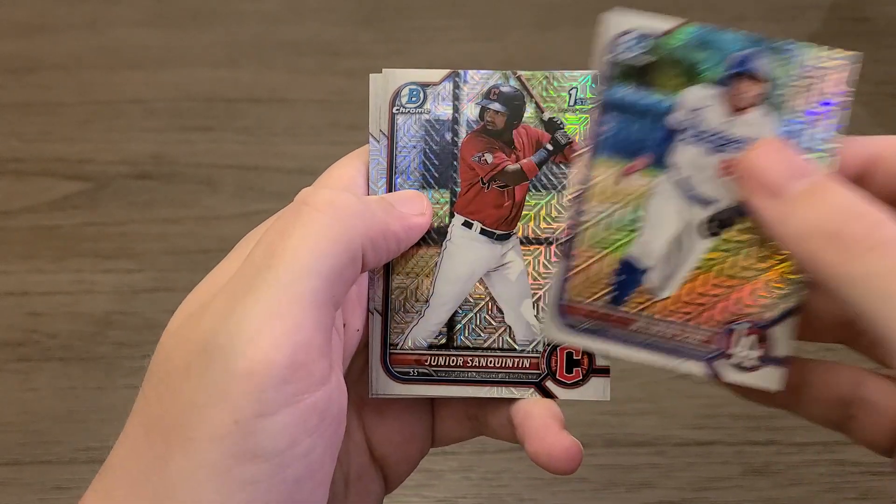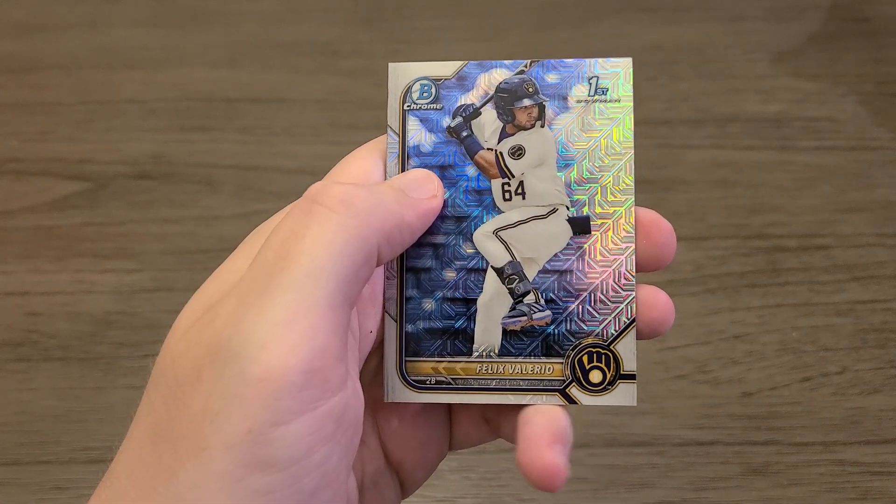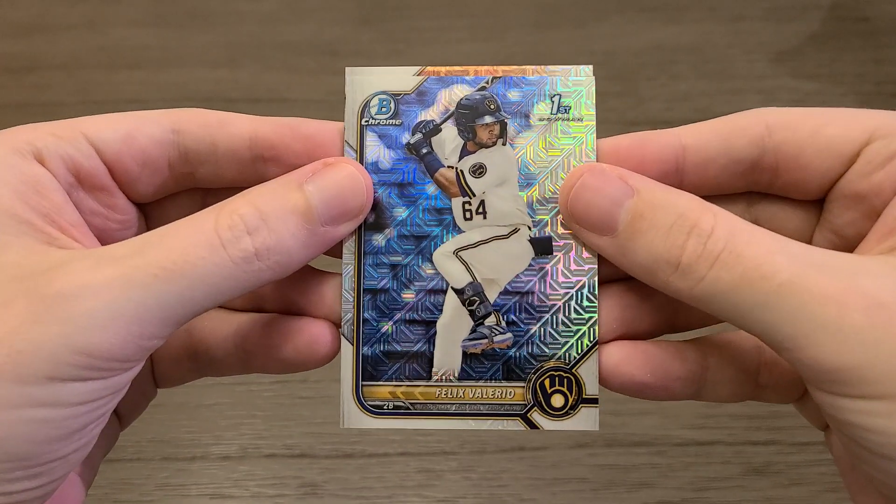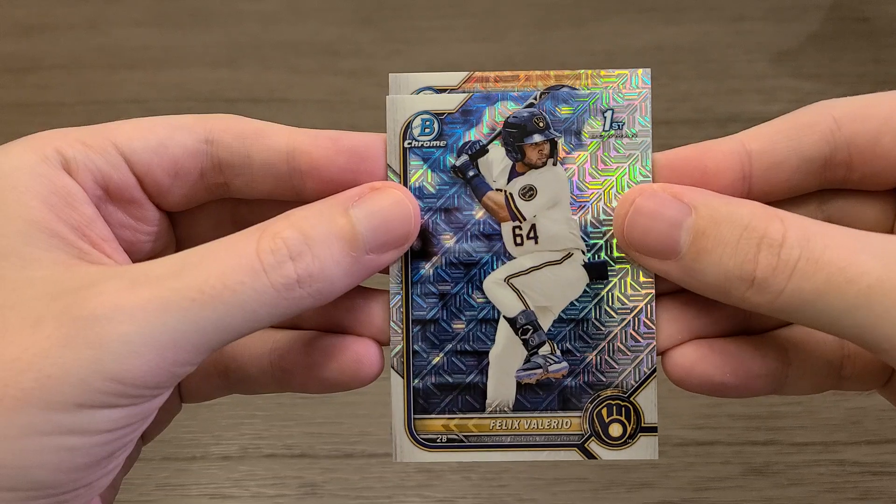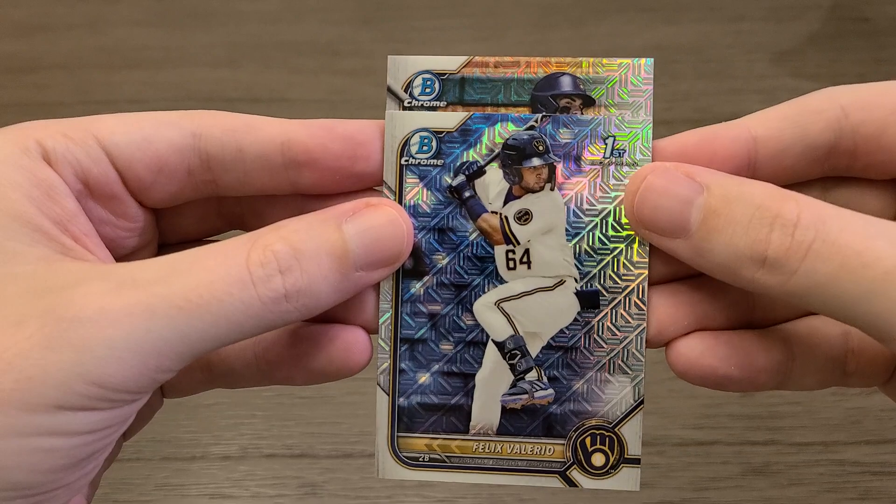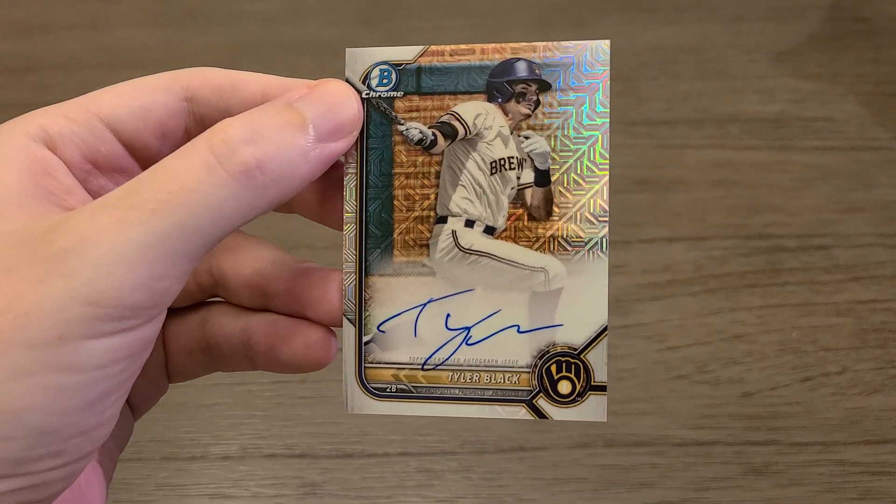Wilman Diaz. Junior San Quentin. Felix Valerio. And I didn't see any color. I don't think that's color. Very slowly. It's a Bowman. I don't think that's color. I think that's just Mojos. This could be an autograph for the Brewers. Tyler Black.